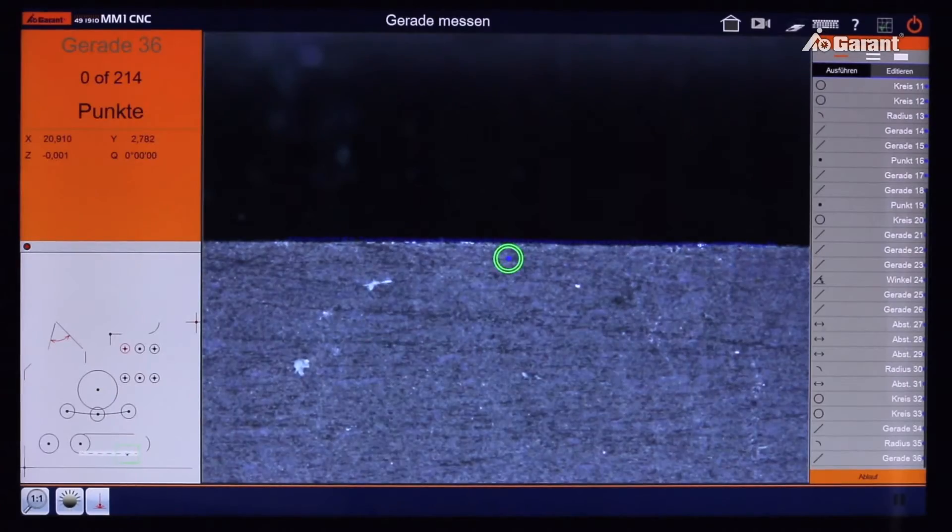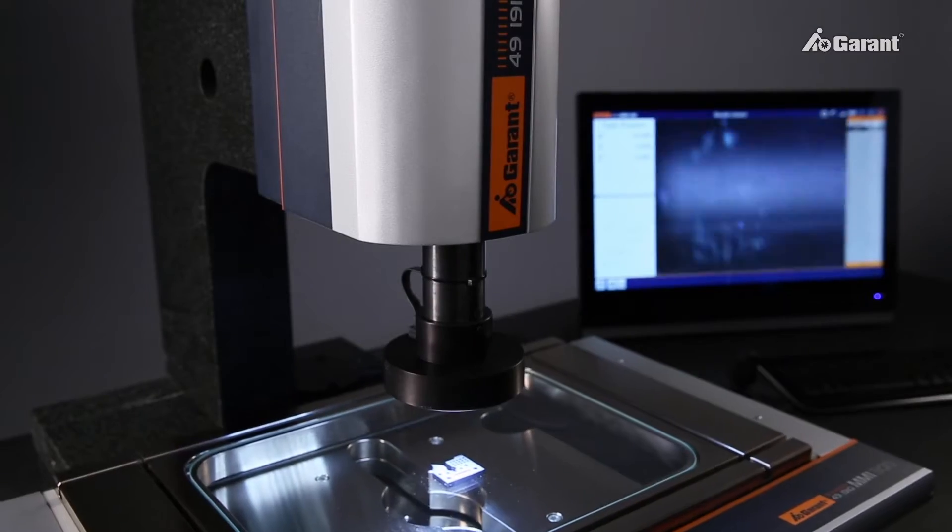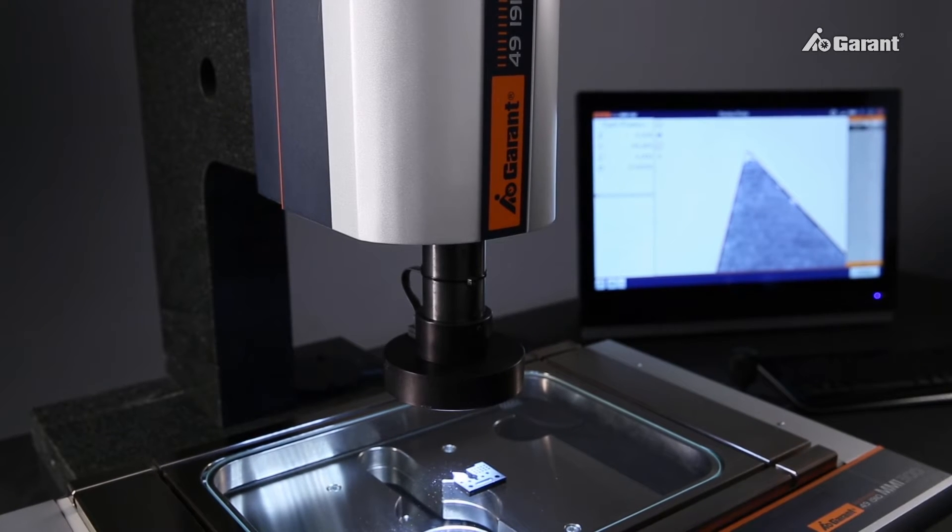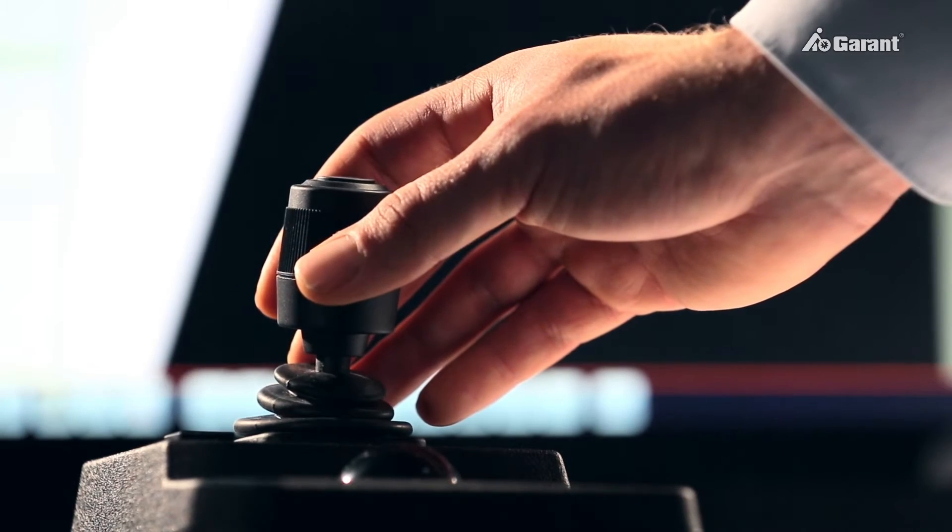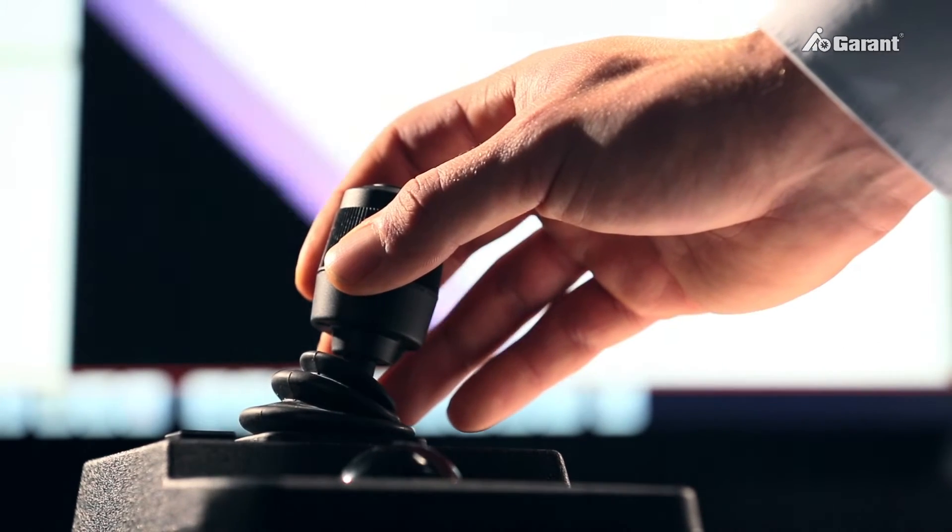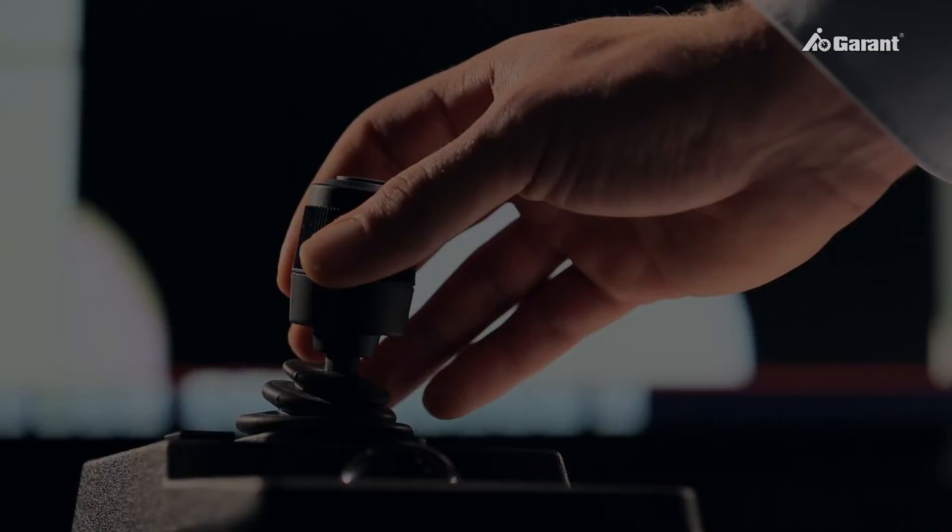This allows creation of individual measurement programs and also automation of measurement procedures. The CNC version is controlled using a joystick or touch screen and offers all the proven advantages of the Garant MM1 video measuring microscope.